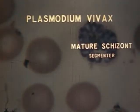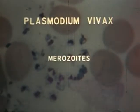In this mature segmenter, there are about 18 or 20 merozoites. Vivax usually has from 12 to 24. This is an unusual view of the merozoites just as the infected cell ruptured.